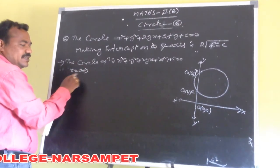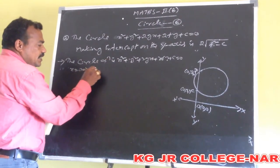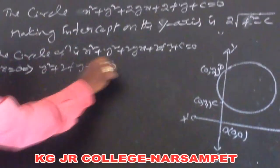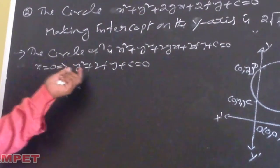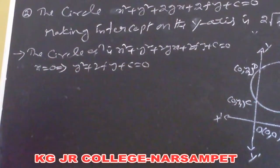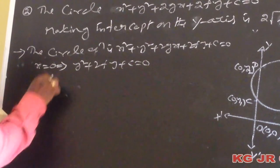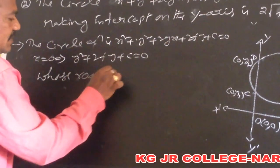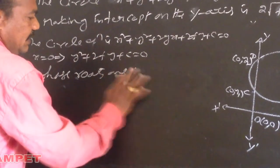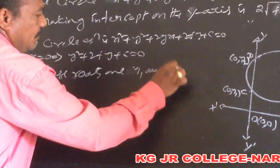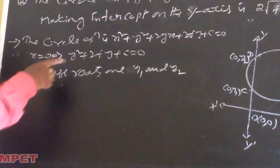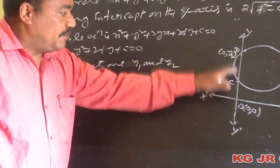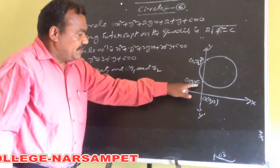We observe that this is a quadratic equation in terms of y, whose roots are y1 and y2 — the y-coordinates of points c and d. So the y-coordinates of the intersecting points are the roots of this quadratic equation.